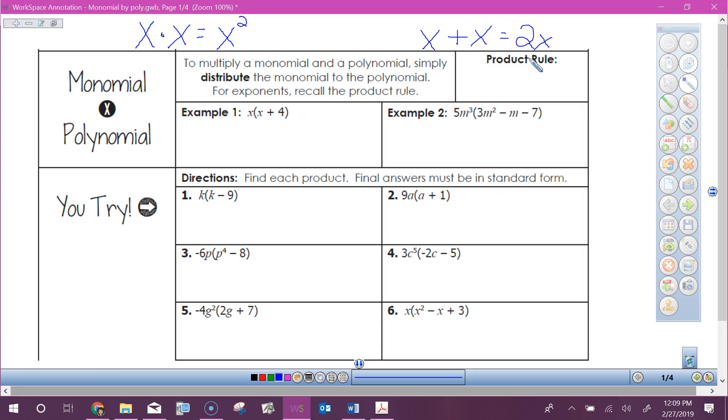So if we multiply example one, x times x is x squared, plus x times 4 is 4x, and those aren't like terms so we just leave them. It's 4x because we're just multiplying 1x times 4, we multiply our coefficients. Example 2: 5 times 2x squared...